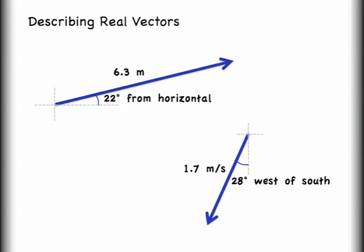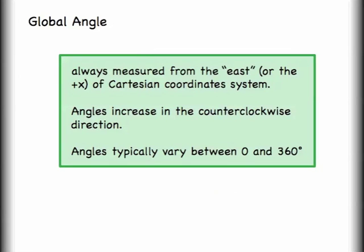It's convenient for physicists and mathematicians to have some sort of normal way to measure our angles. I call this the global angle. But for it to work, we just pick some criteria that everybody can agree on. We say that we always measure from the east position, or if I were using Cartesian coordinates, that would be the positive x. That is our zero degrees. That's our reference. We will say that angles always increase in the counterclockwise direction. Lastly, we will say that angles typically vary between zero and 360 degrees.